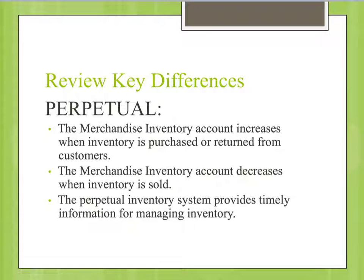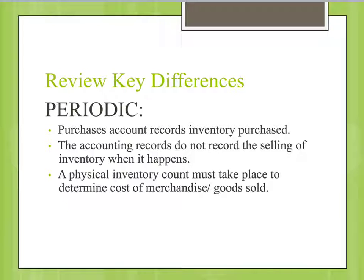Let's review some key differences between perpetual and periodic inventory systems. Under the perpetual method, the merchandise inventory account increases when inventory is purchased or returned from customers, and decreases when inventory is sold. The perpetual system provides timely information for managing inventory and keeps cost of goods sold continually current. Under the periodic system, a Purchases account records inventory purchased, the accounting records do not capture the sale of inventory as it happens, and a physical inventory count must take place to determine cost of goods sold.